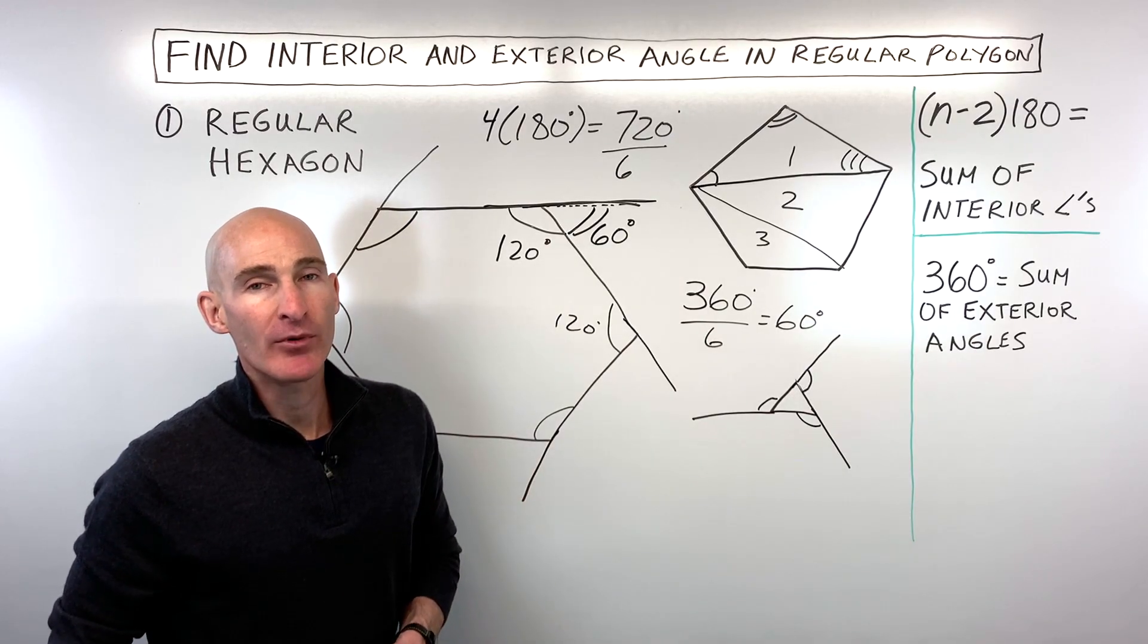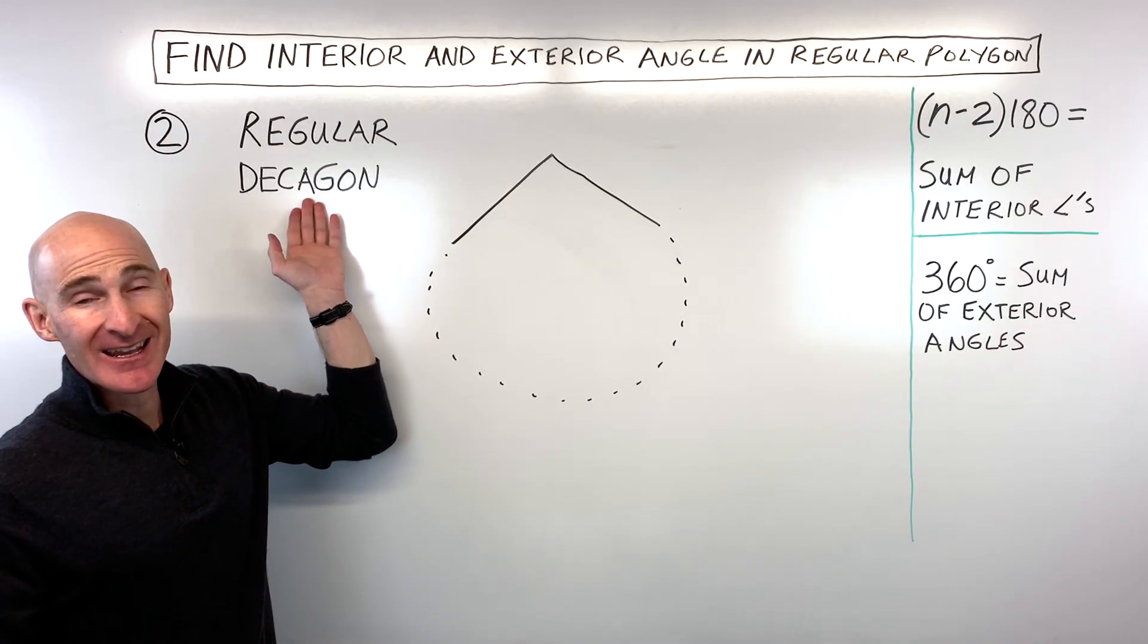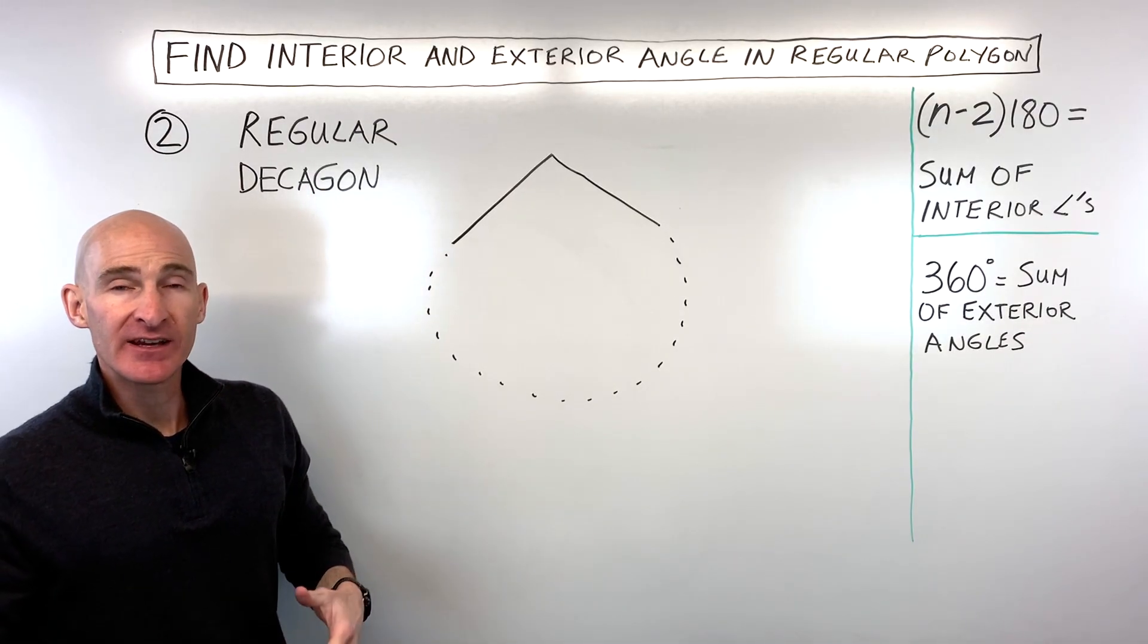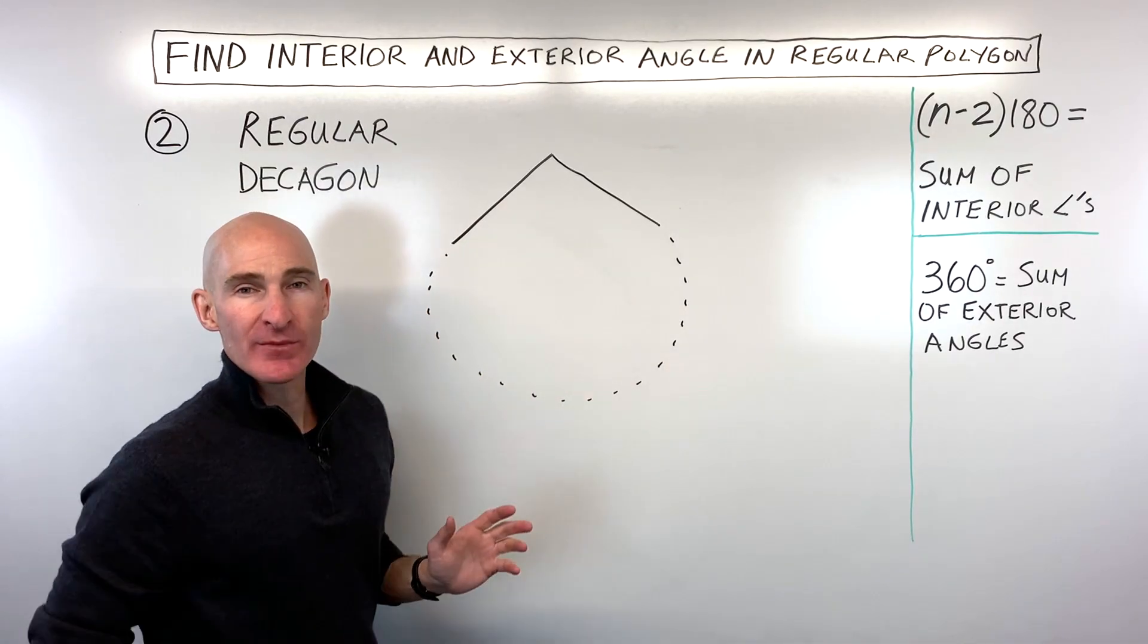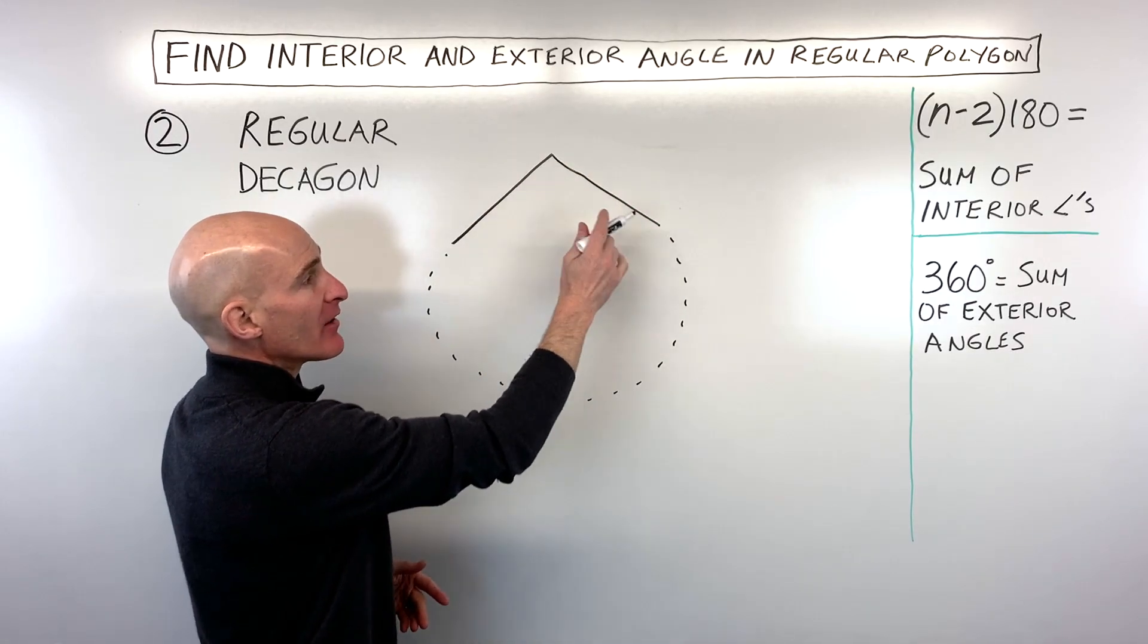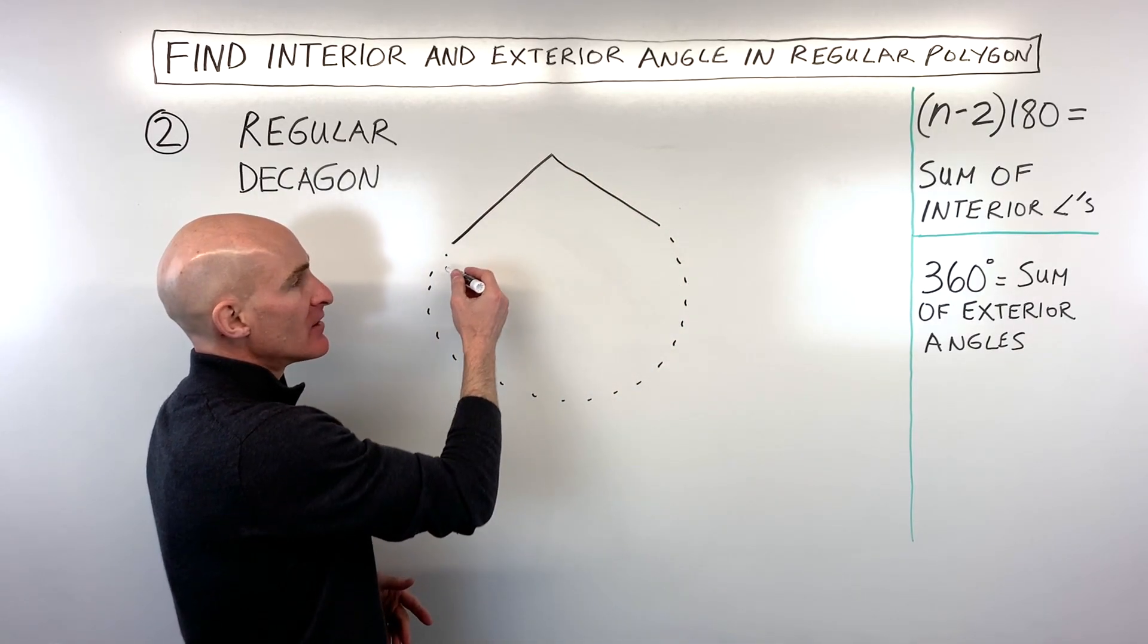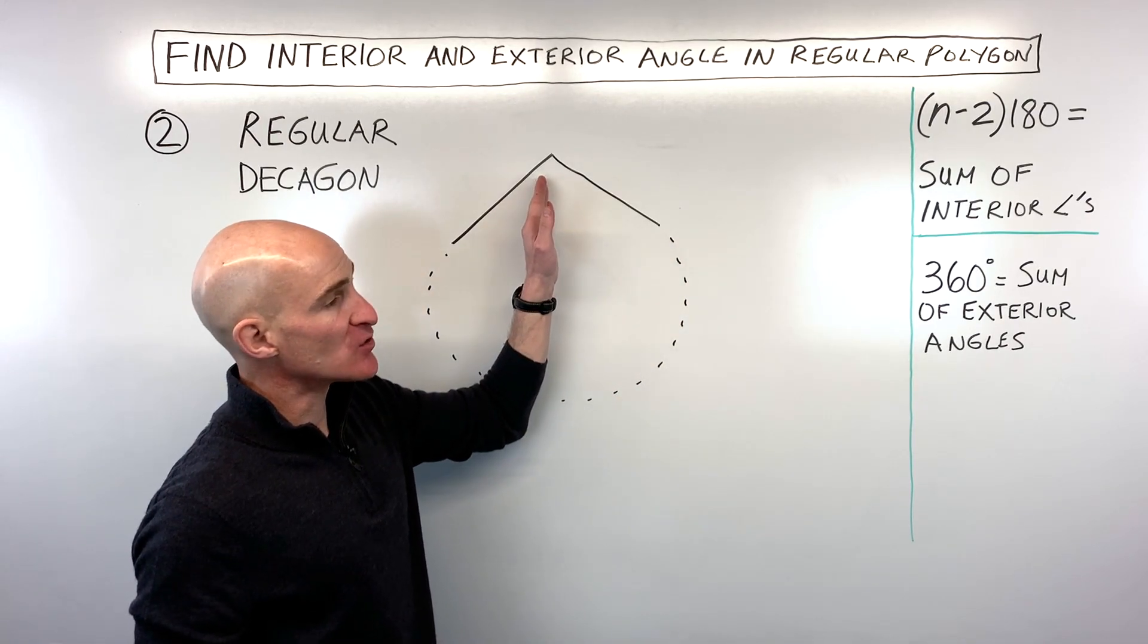Let's take a look at another example. So for example number two, let's take a look at a regular decagon. So decagon is like decade—10 years in a decade. And we don't always know how to draw some of these polygons, but what we can do is we can draw like one angle in the polygon and just kind of sketch out the rest of it. It doesn't have to be exact. We're mainly focused on just this one angle.